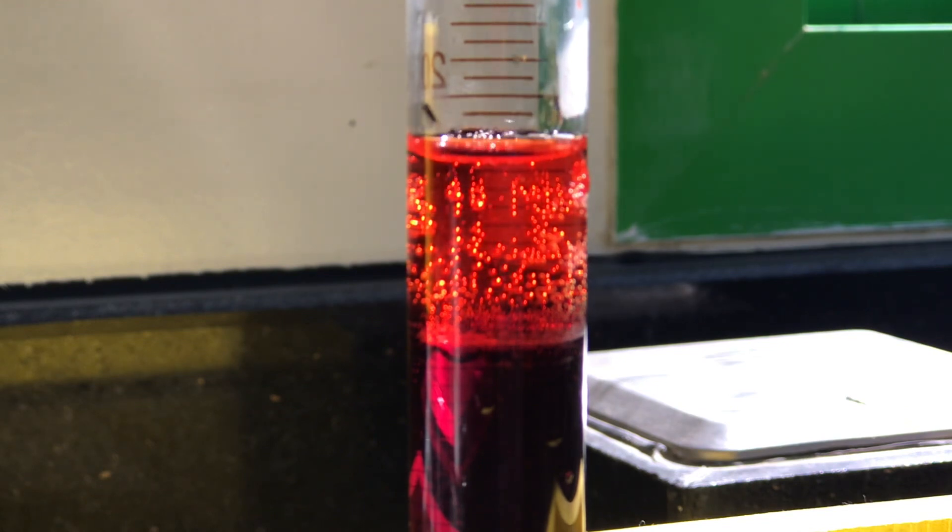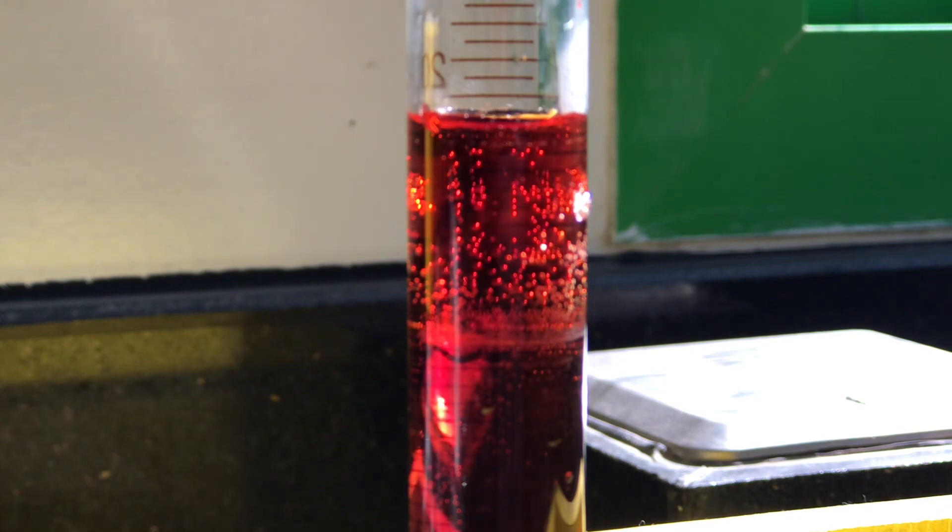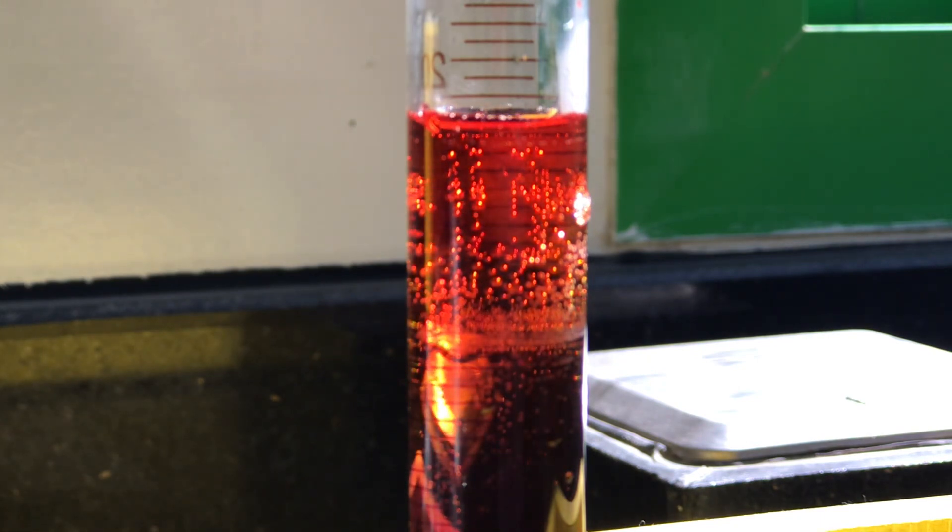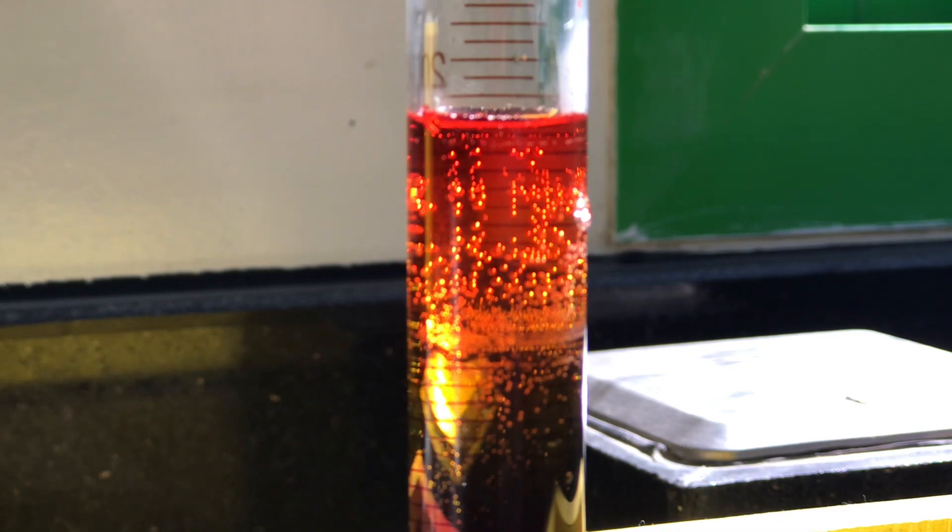You can just use the natural agitation that takes place when the ethanoic acid meets the bottom layer. Just leave that to react. You should start to see some colours now coming through.